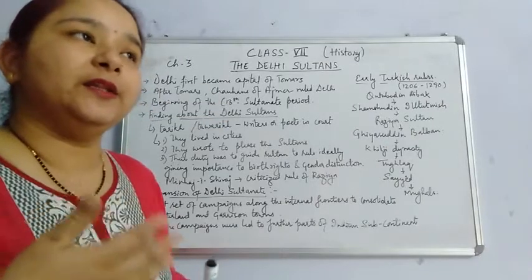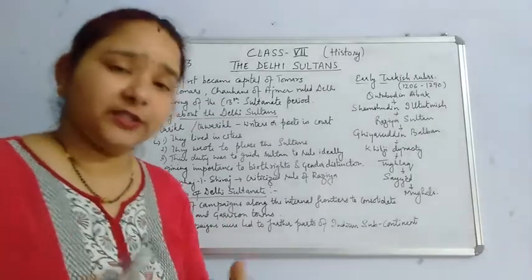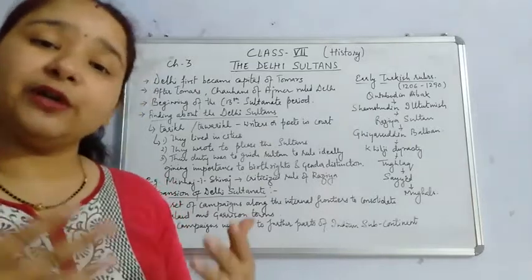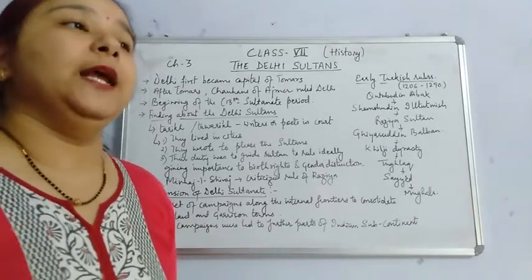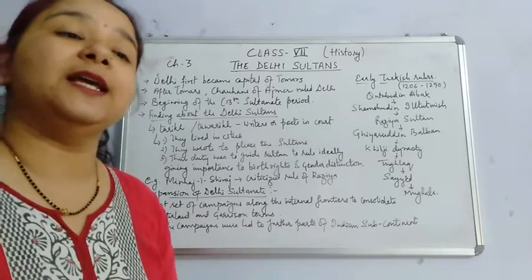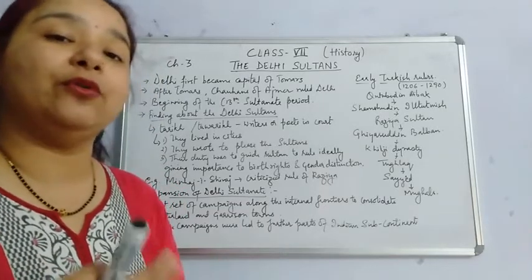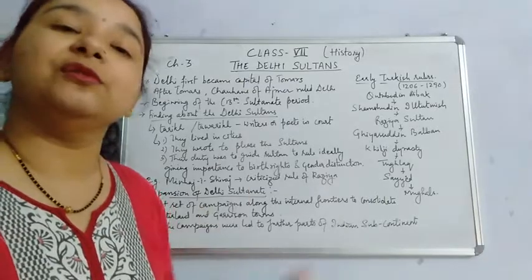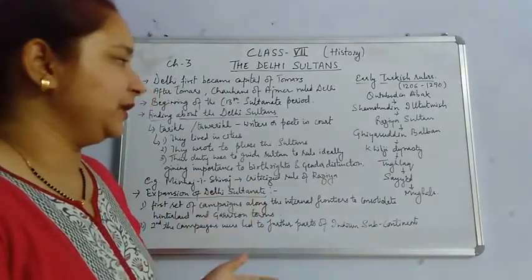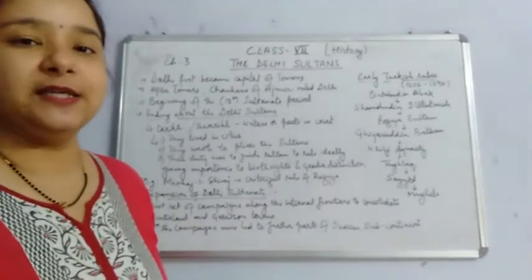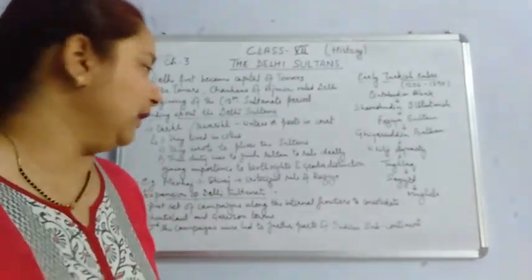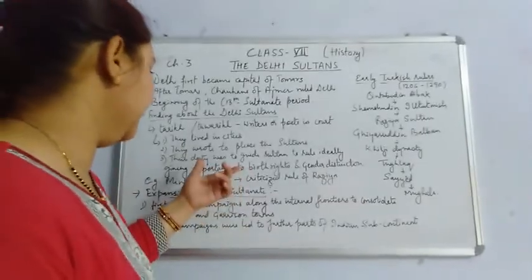They wrote to please the Sultan — their purpose of writing was to please the Sultan, since they were appointed for that purpose only. So whatever they wrote was always in favor of the Sultan; they would never write about any bad policies that might displease him. Many times the information they provided was in an exaggerated form — praising the Sultan in an embellished way.